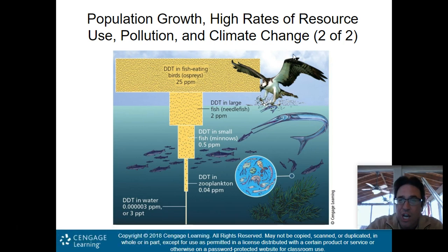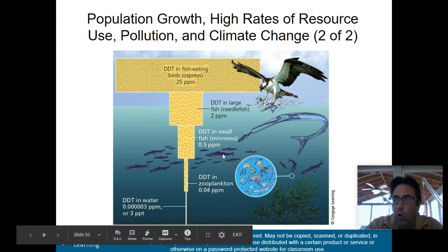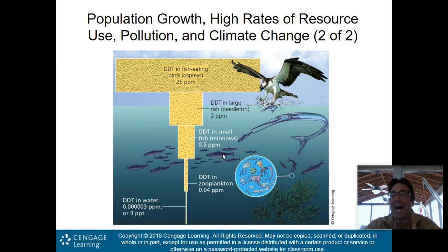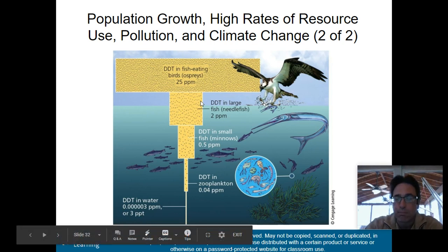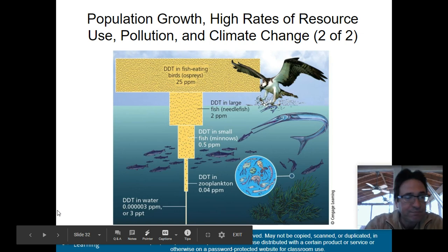To summarize: bioaccumulation is the pollution accumulating in each individual organism, while biomagnification is the process by which, as you move up through trophic levels, the pollution becomes more and more concentrated.